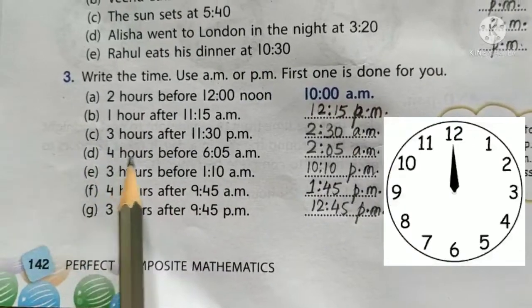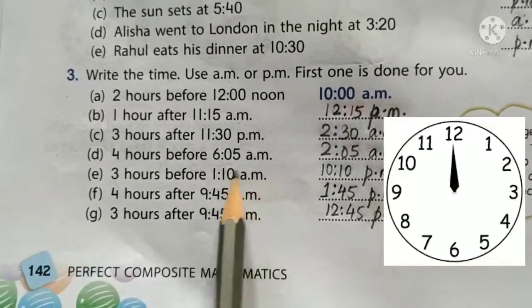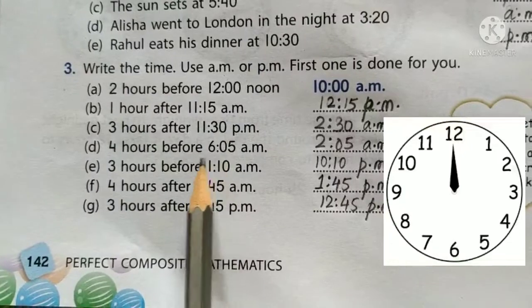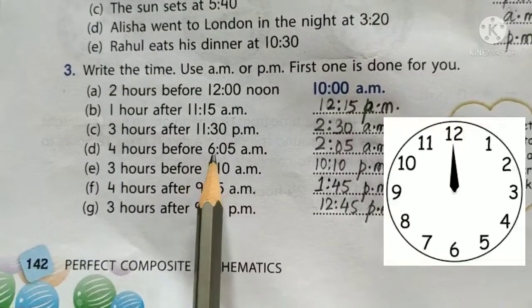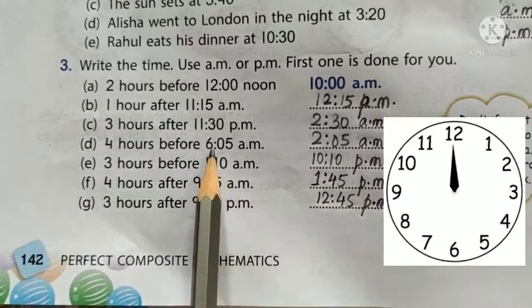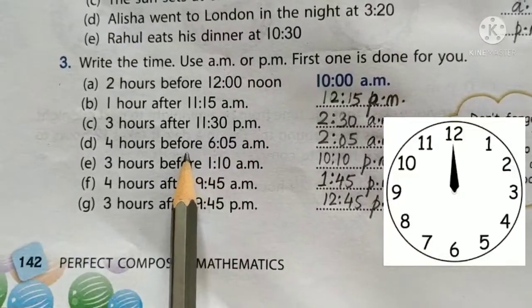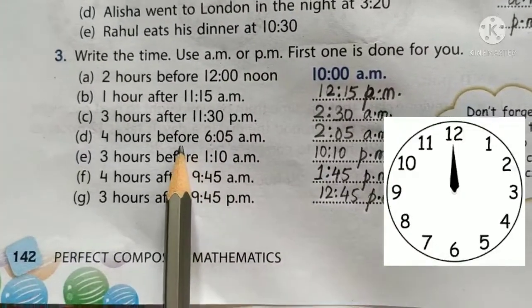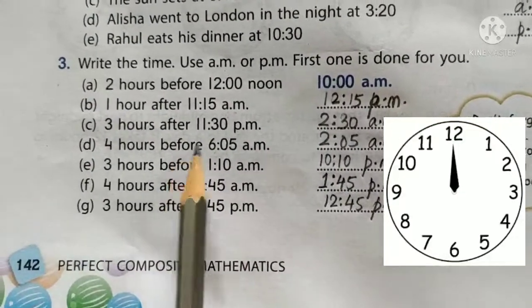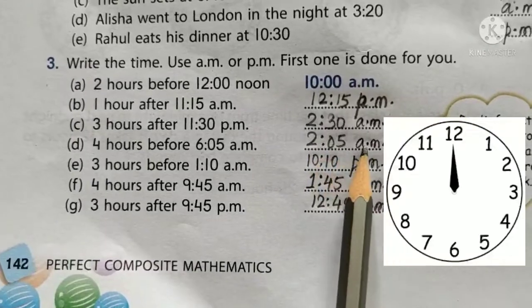4 hours before 6:05 AM. Before means earlier, so: 5:05, 4:05, 3:05, 2:05. The answer is 2:05 AM.